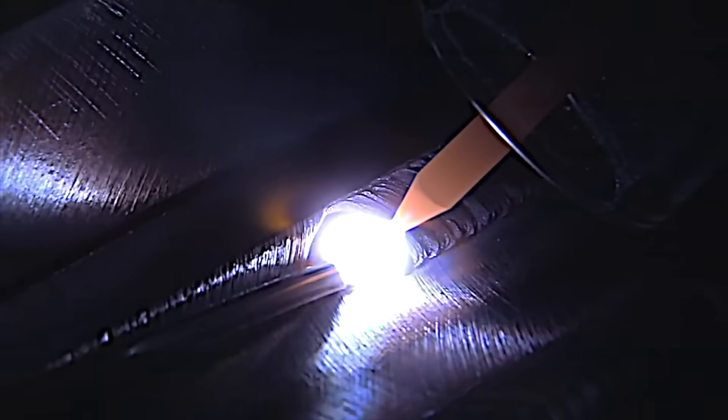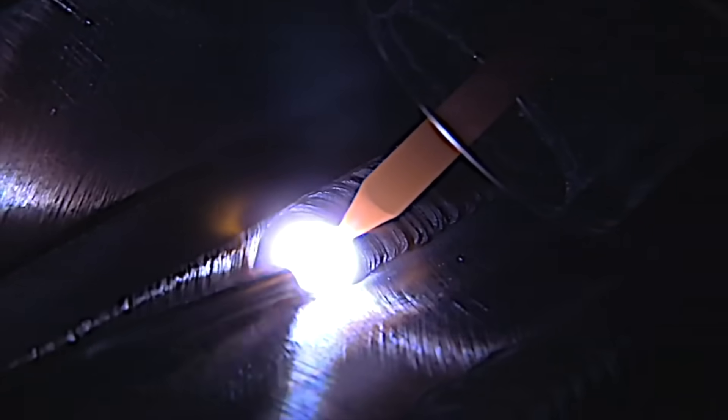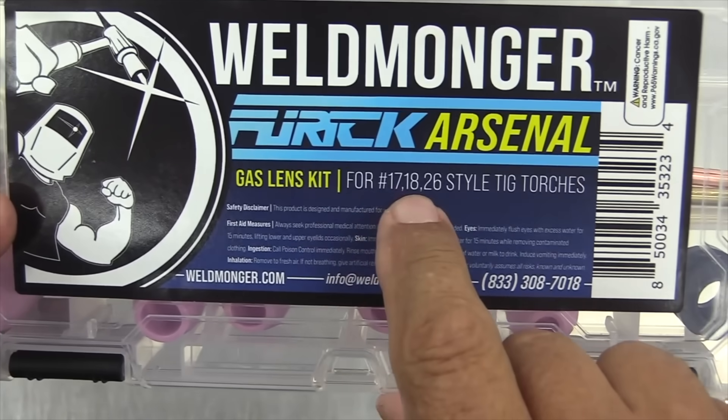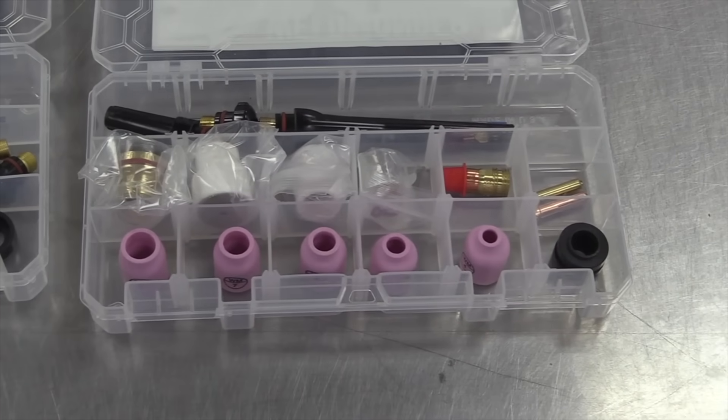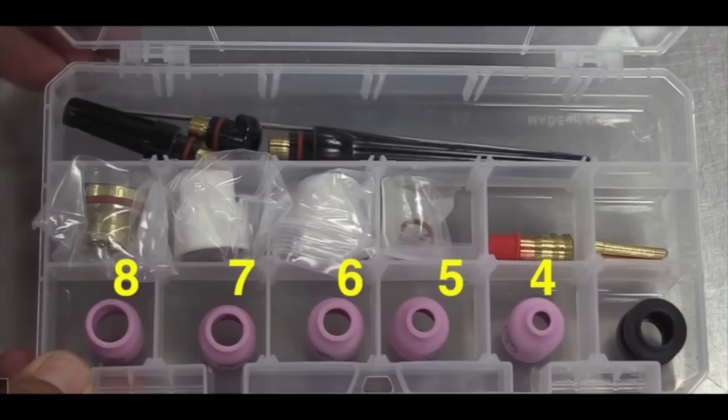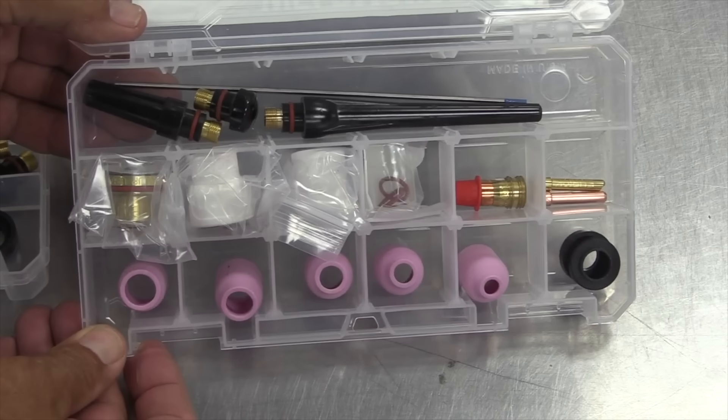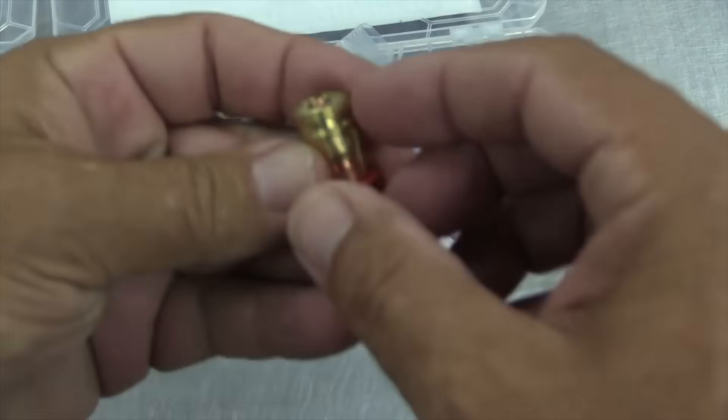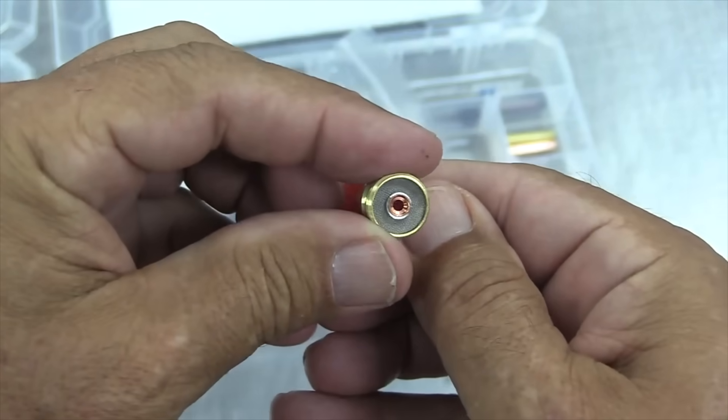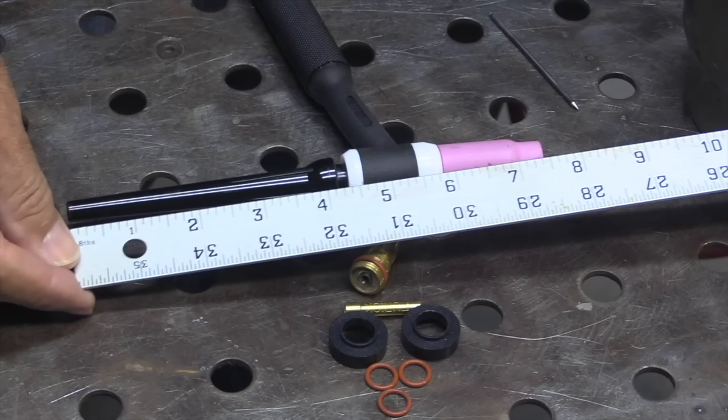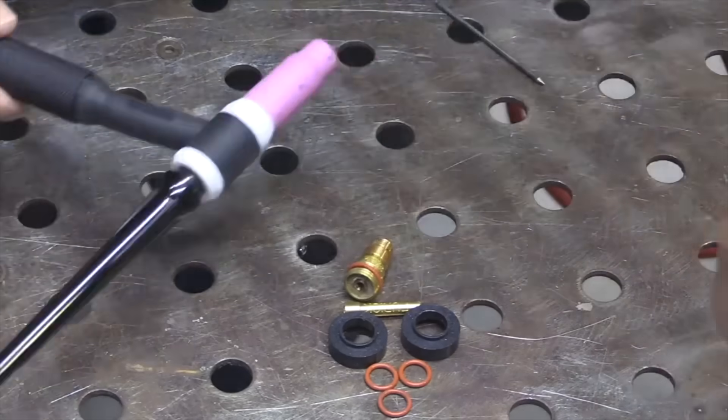I want to take a minute and show you some of the changes we've made to one of our most popular TIG kits. It's the Weldmonger Furic Arsenal kit. What we've done is we've added a four through eight standard ceramic cup to make this kit even more useful for most every situation. The large Furic cups are great for stainless, Inconel, titanium, but sometimes you don't need all that gas. This 3/32nd Furic gas lens works with all these cups. Let's look at swapping out the normal hardware with the Furic Arsenal kit hardware.